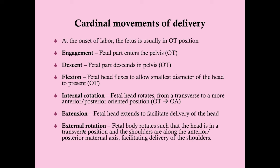Once the anterior shoulder is delivered from beneath the symphysis pubis, it's relatively easy to deliver the posterior shoulder. After that comes expulsion — the final step. Once you get the head and first shoulder out, the baby comes out quite easily. The second stage of labor is complete with full delivery of the baby.